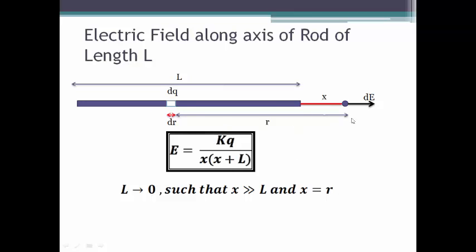And therefore your final answer must be E equals to k q by r square. If you can't solve it back to k q by r square, then you have definitely made a mathematical mistake in the derivation part or you have made a mistake while assuming for the point charge itself.